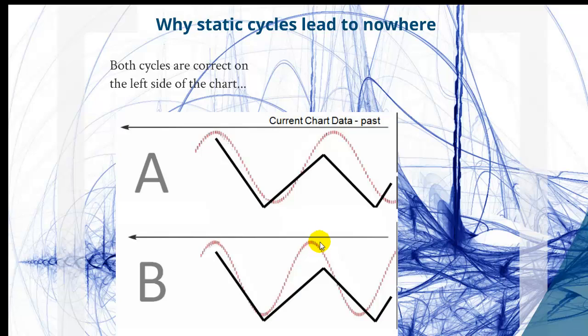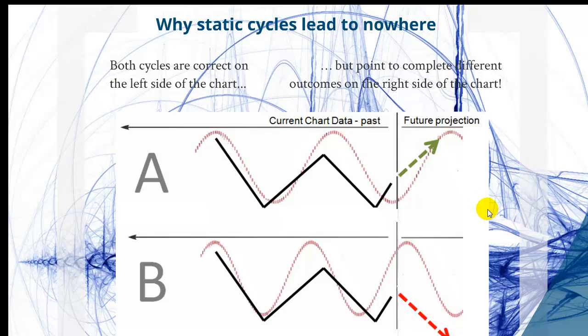then we have the top which is quite in alignment with the theoretical cycle top, then we have the cycle bottom area where the low is and the move up. If you just look at the left side of the chart, both cycles are correct on the left side.